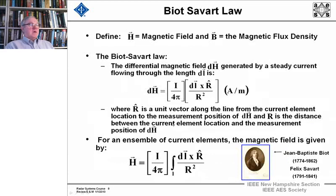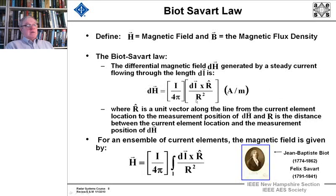For the magnetic field, Biot-Savart developed this law, which describes the magnetic field generated by a steady current. The differential magnetic field is the current divided by 4 pi times the steady current that flows through a differential length, crossed into a unit vector along the line from the current element to the measurement position, and divided by the distance r squared between dL and the measurement point. For an ensemble of current elements, you just integrate this up to get the magnetic field intensity.